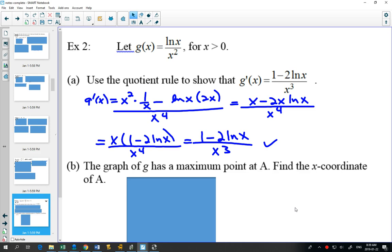So the graph of G has a maximum point at A. Find the coordinate of A. What we need to find first of all is where there's critical points.